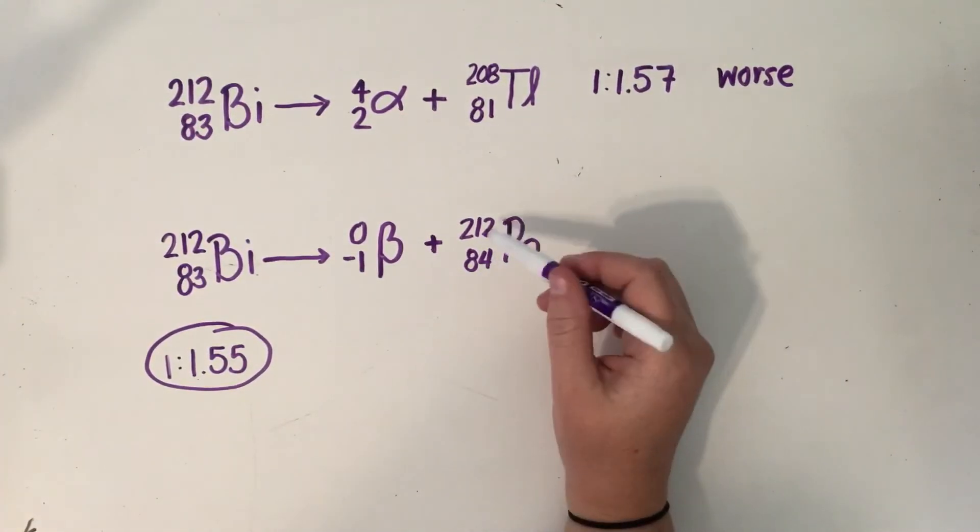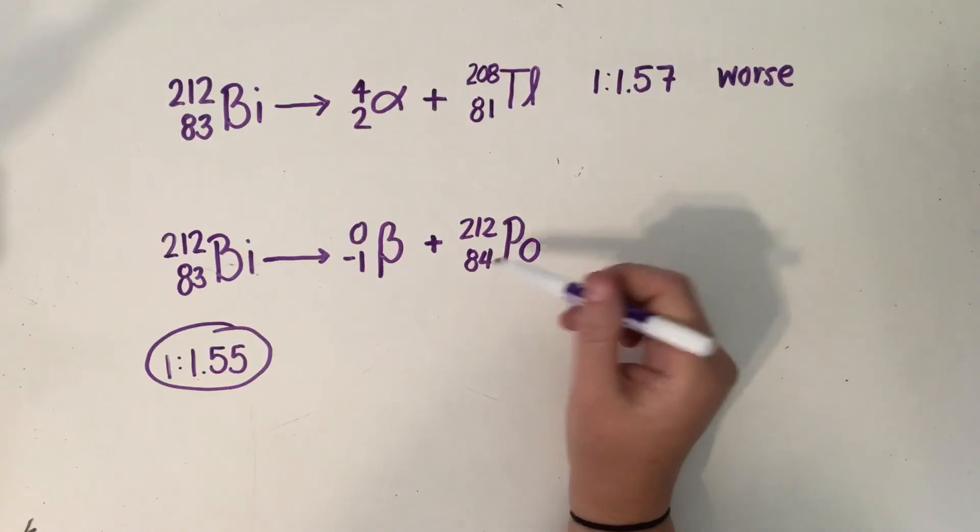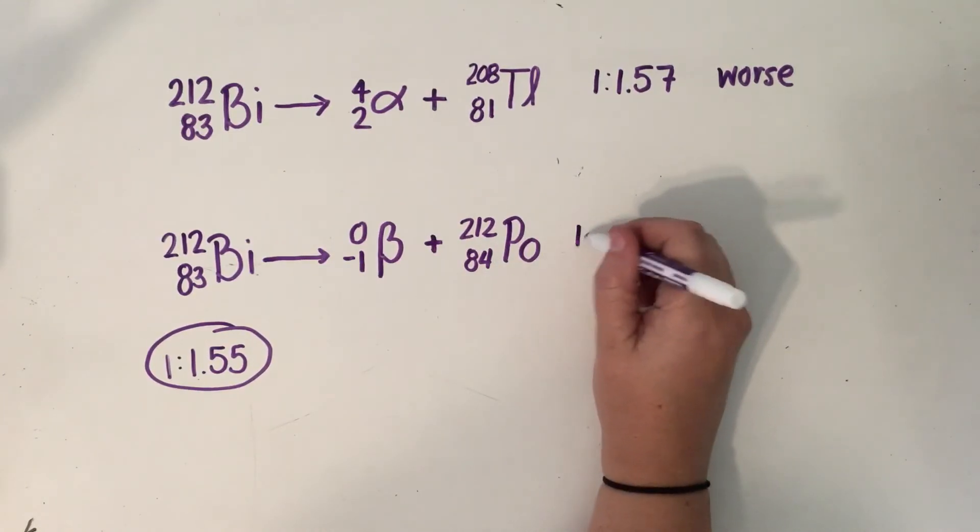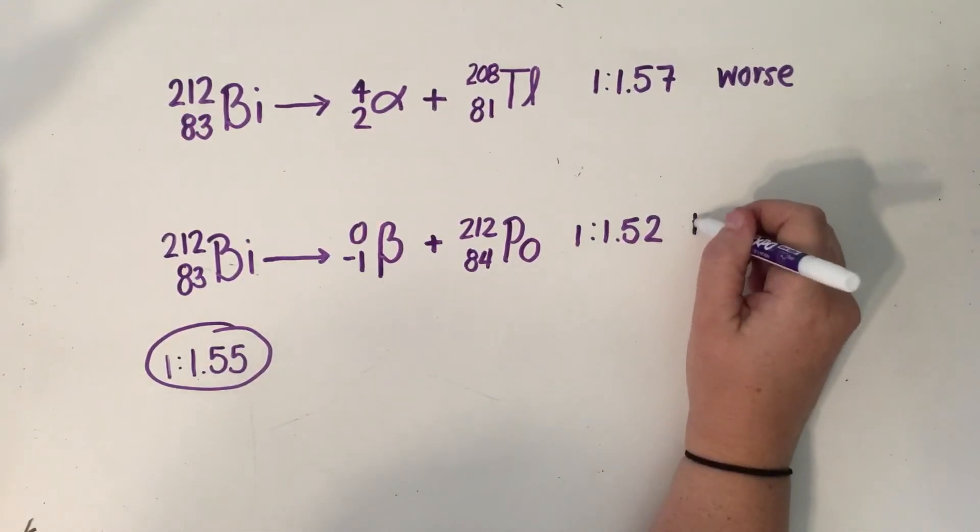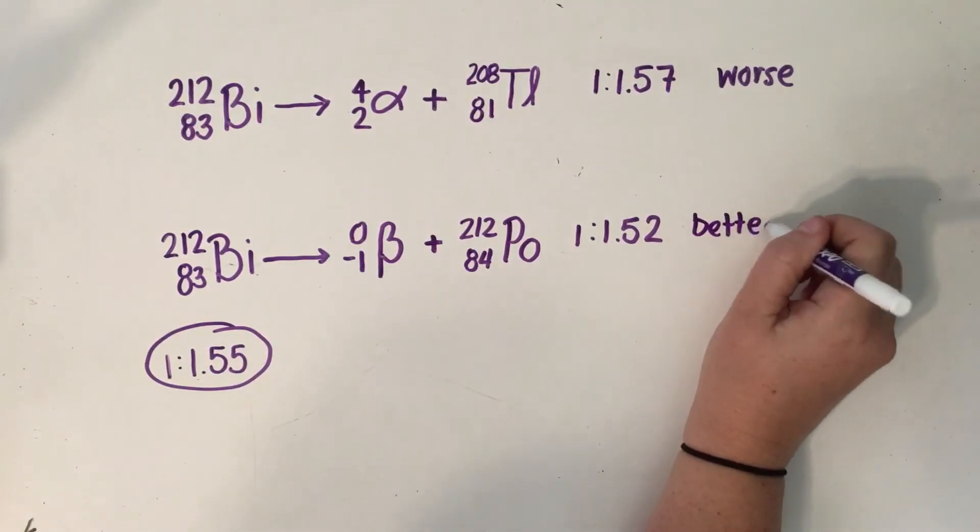Whereas here, if we take 212 minus 84 and then divided by 84, our new ratio is now 1 to 1.52. Still not quite within the band of stability since the cutoff is at 1.5, but it's definitely moving in the right direction. So this one got better. It became more stable.